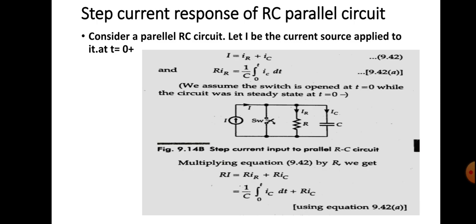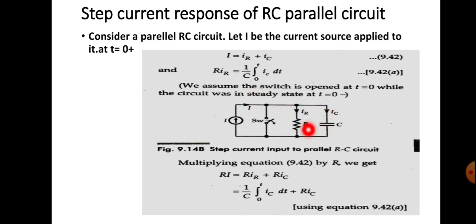Similarly, we derive the equation for the response when applying a step current to a parallel RC circuit. Here we use a parallel RC circuit with a constant current source of magnitude I and a switch. Whenever the switch is closed, there is no current through the parallel part; whenever it is opened at t equal to 0 plus, current flows through the circuit. When current flows, we write the KCL equation as I equal to IR plus IC. The voltage drop across the resistor equals the voltage drop across the capacitor, given by R·IR equal to (1/C)·integral from 0 to t of IC·dt.